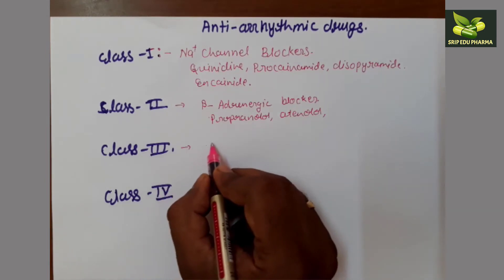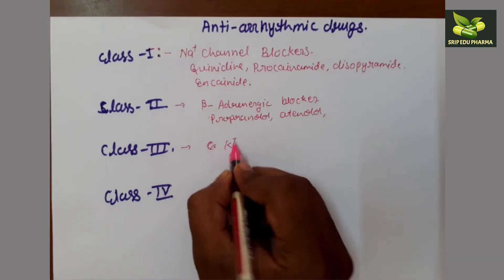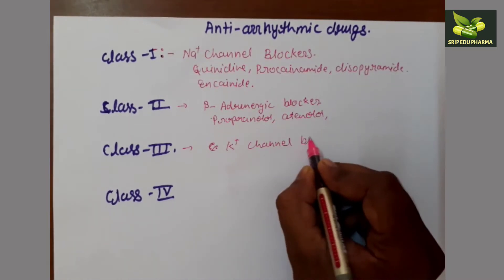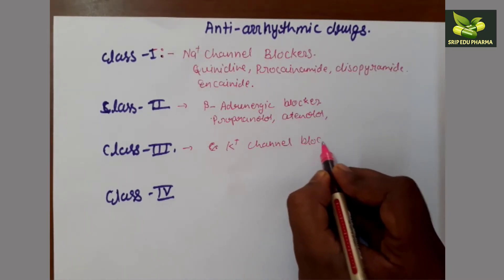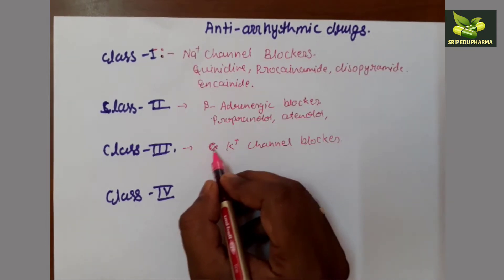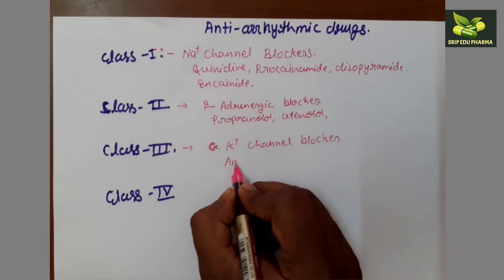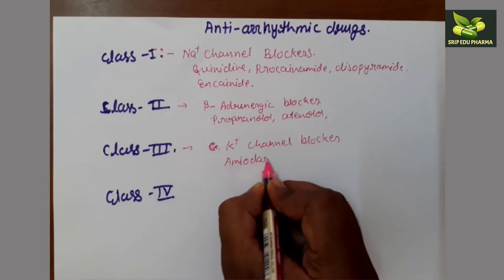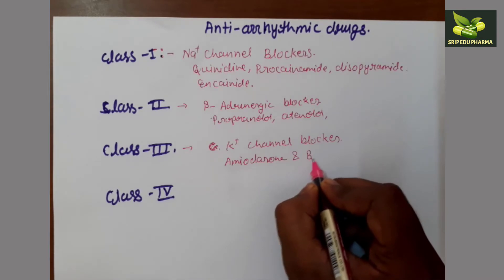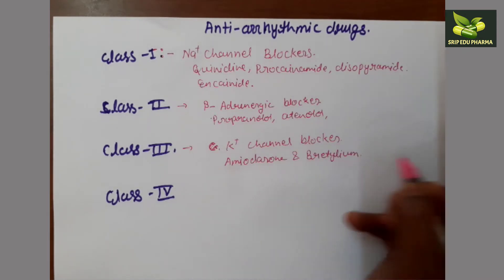Class three drugs are potassium channel blockers. We use potassium channel blockers in the case of arrhythmia, while potassium channel openers are used in the case of angina treatment. Examples include amiodarone and bretylium.